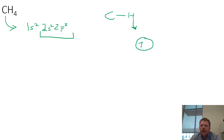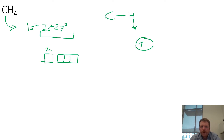We know that hydrogen has a single electron in an s orbital. Carbon has two electrons in the 2s orbital and two electrons in the 2p orbital. When we draw the orbital diagram for carbon, we've got the 2s orbital and the 2p orbital filled in as: one up, one down, one up, one up. So we have two spots with unpaired electrons, but neither of those look like an s orbital. So what we need to do is hybridize.